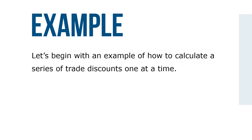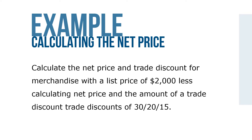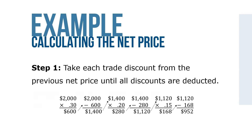Let's begin with an example of how to calculate a series of trade discounts one at a time. Calculate the net price and trade discount for merchandise with a list price of $2,000, less trade discounts of 30%, 20%, and 15%. Take each trade discount from the previous net price until all discounts are deducted. I suggest drawing arrows to help you understand how to take each trade discount from the previous.